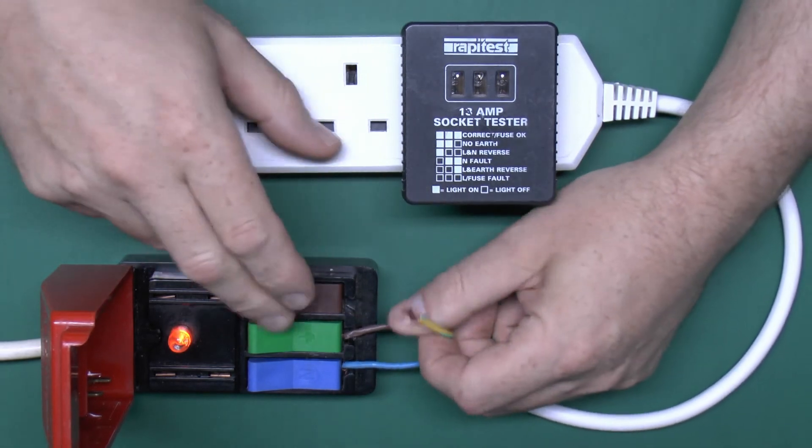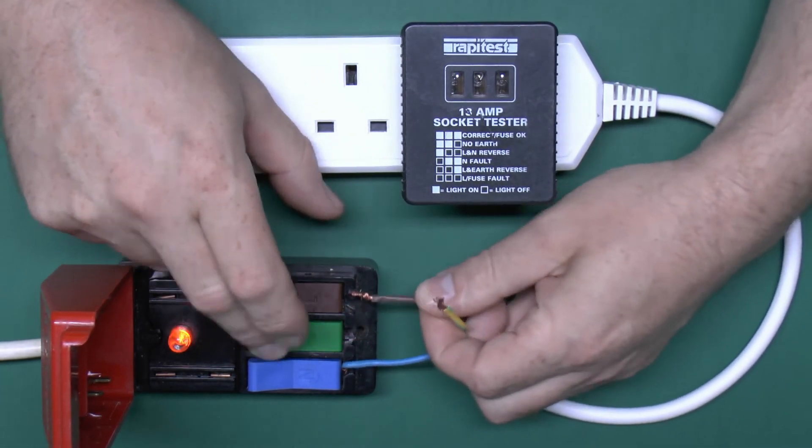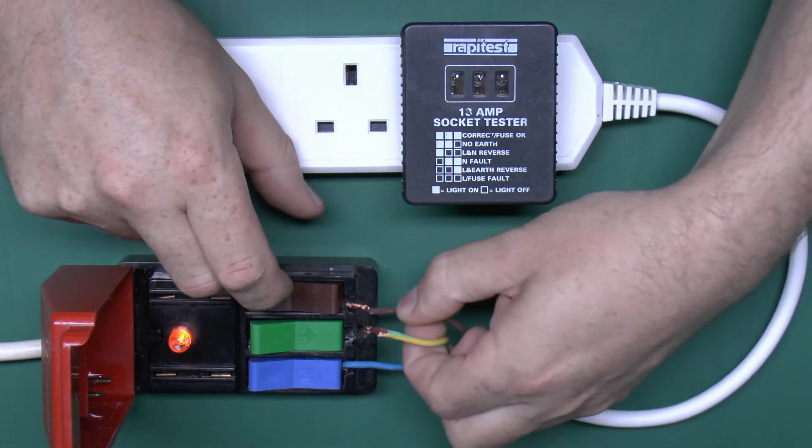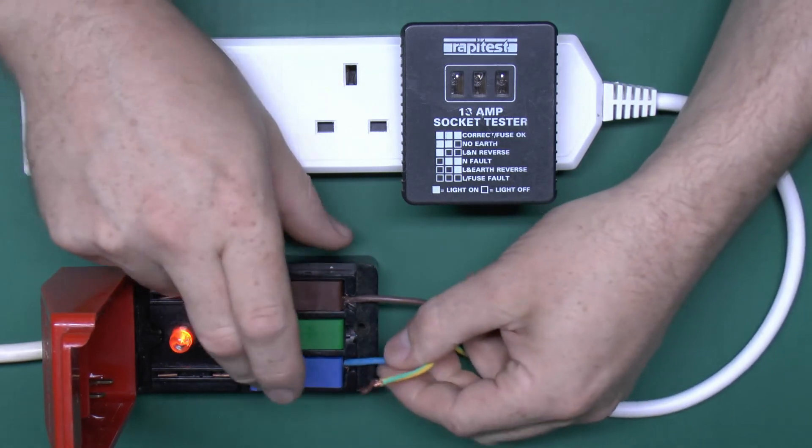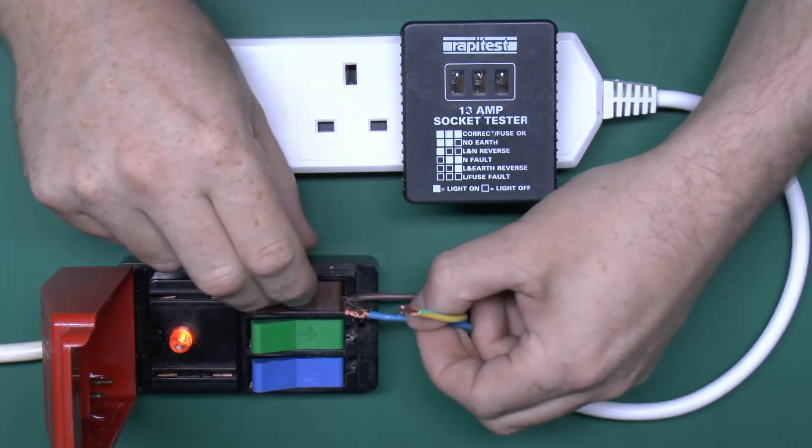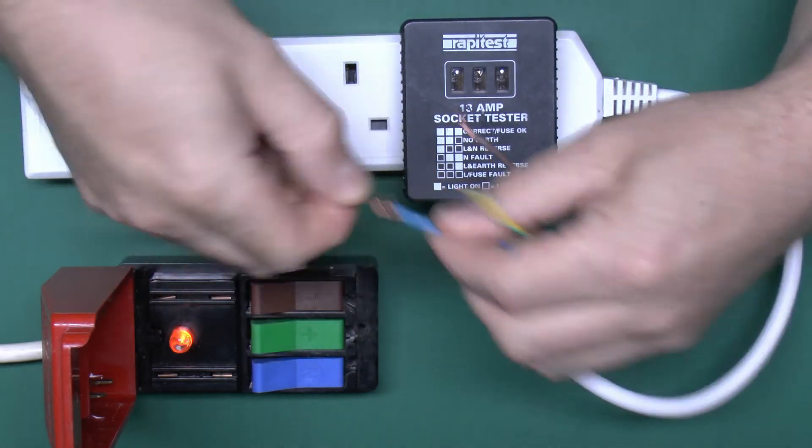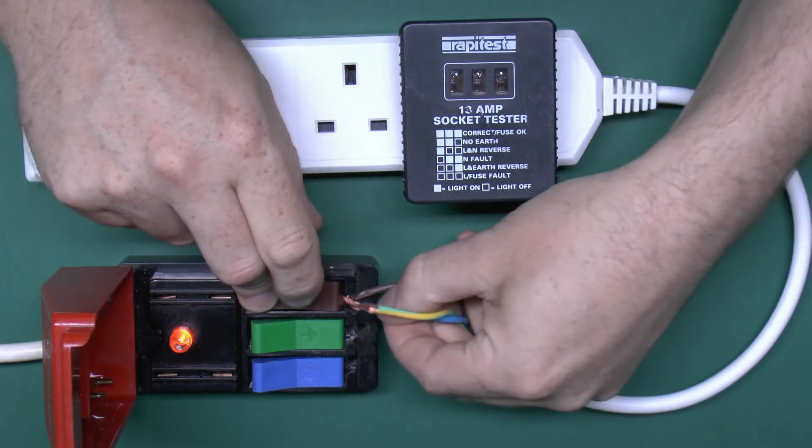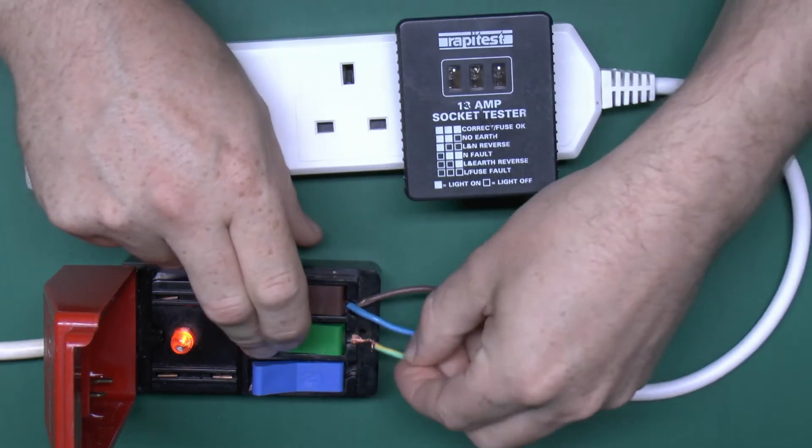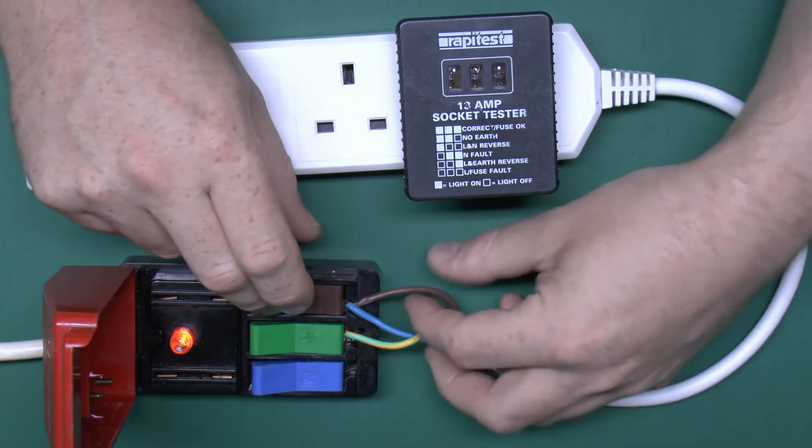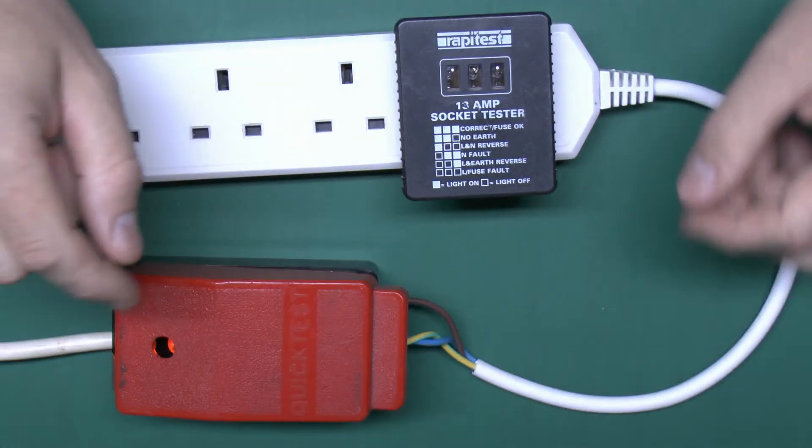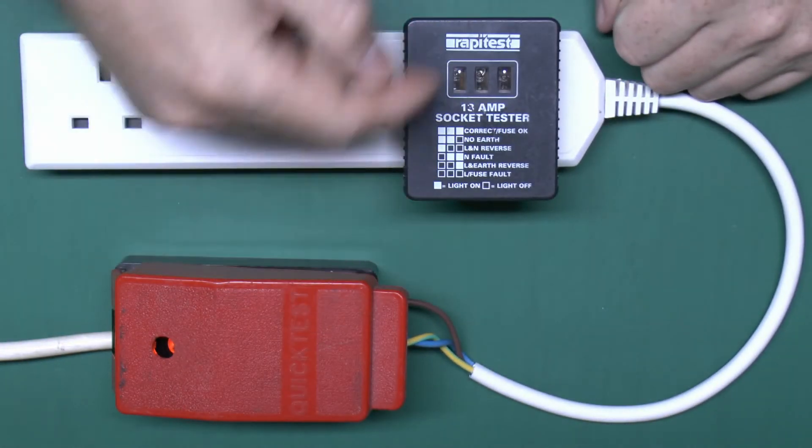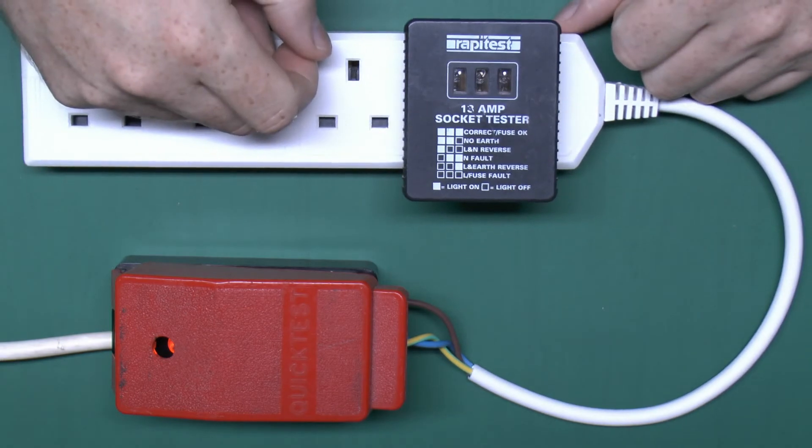So here's some examples of other possible mistakes here. So for example, if you have two connected to the same, how about line and neutral connected to the same terminal. Let's tighten that up a bit, so we have two in there, and we'll assume the earth was connected just like that. And what do we get? Well, who knows, because none of these are actually going to be applicable.